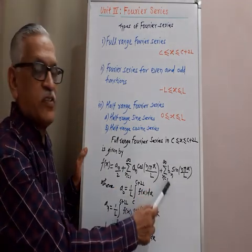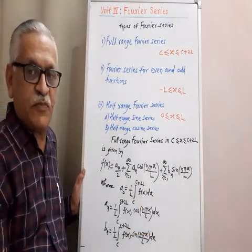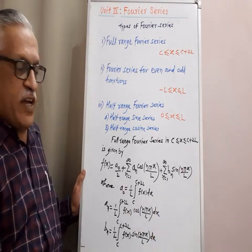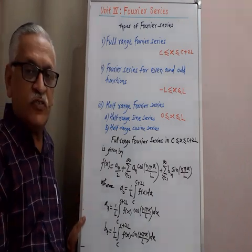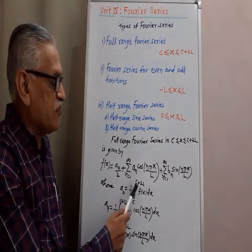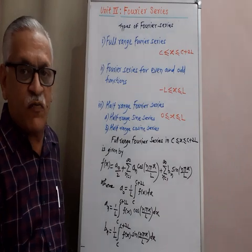Next, summation of bn sin(n pi x by L) where n changes from 1 to infinity. The Fourier coefficients are given by a0 equals 1 by L integral from C to C plus 2L of f(x) dx.